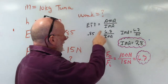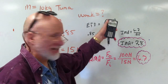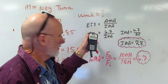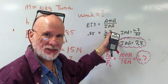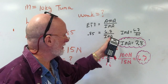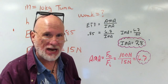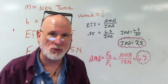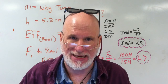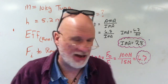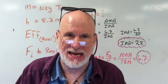How'd you do? Efficiency equals AMA over IMA. 0.85 equals 6.7 divided by IMA. Solve for IMA. IMA equals 6.7 divided by 0.85. IMA is 7.8.